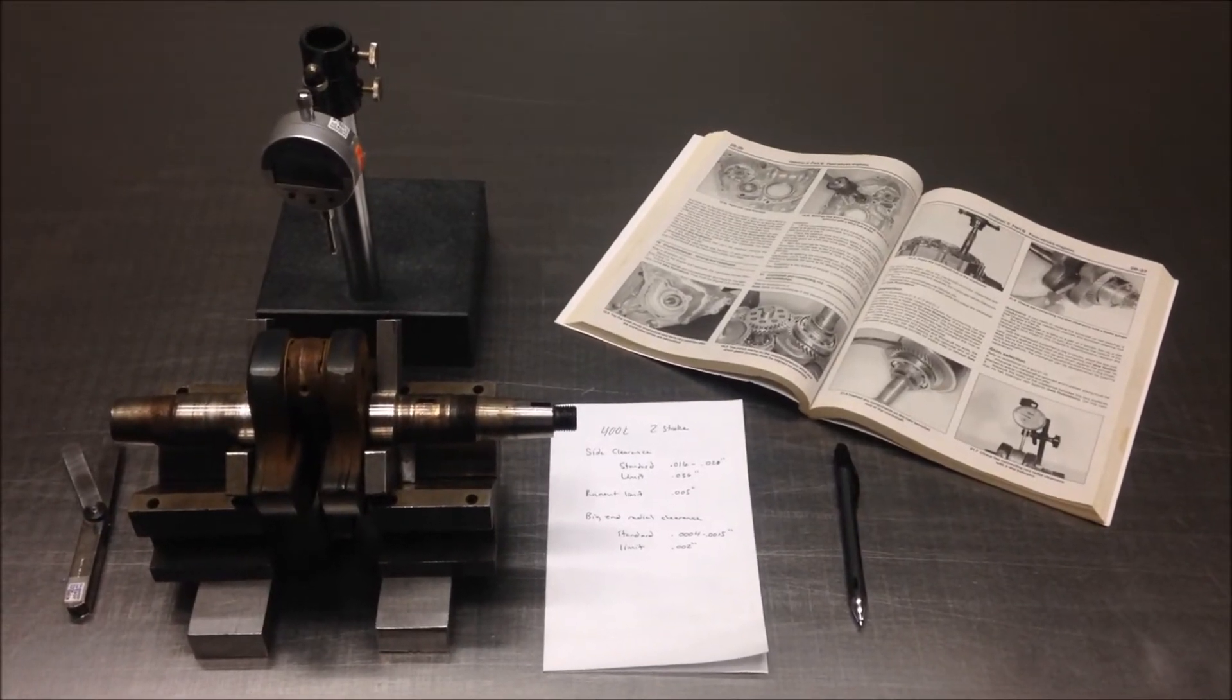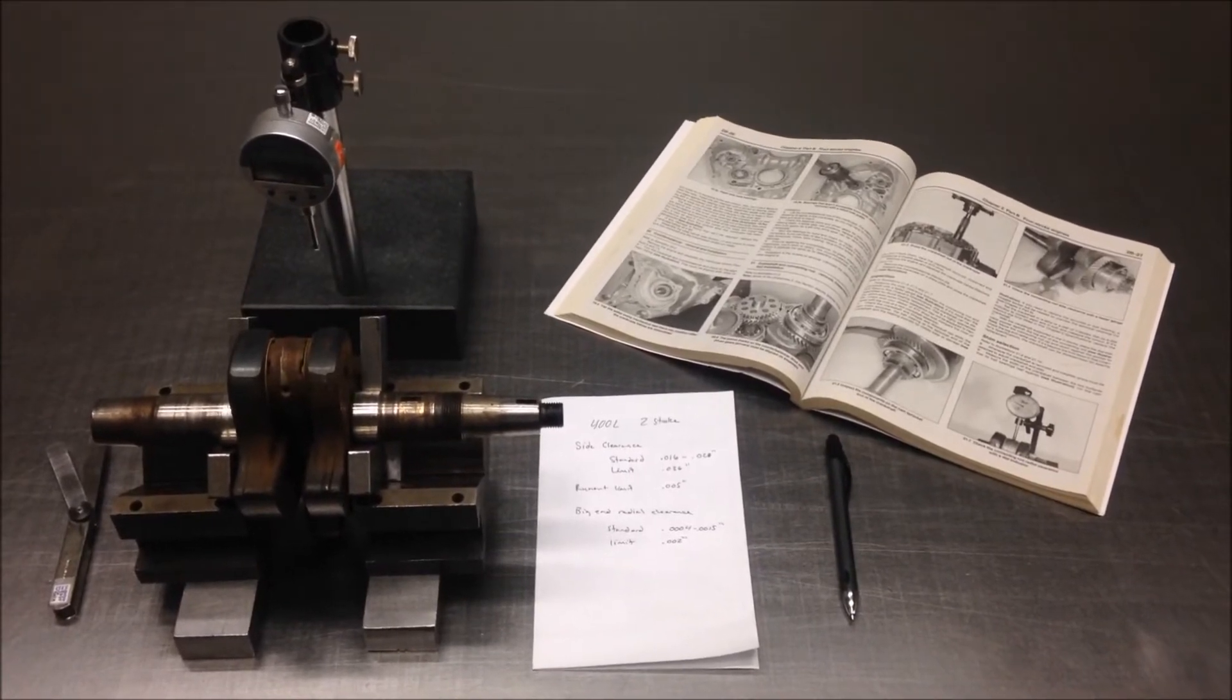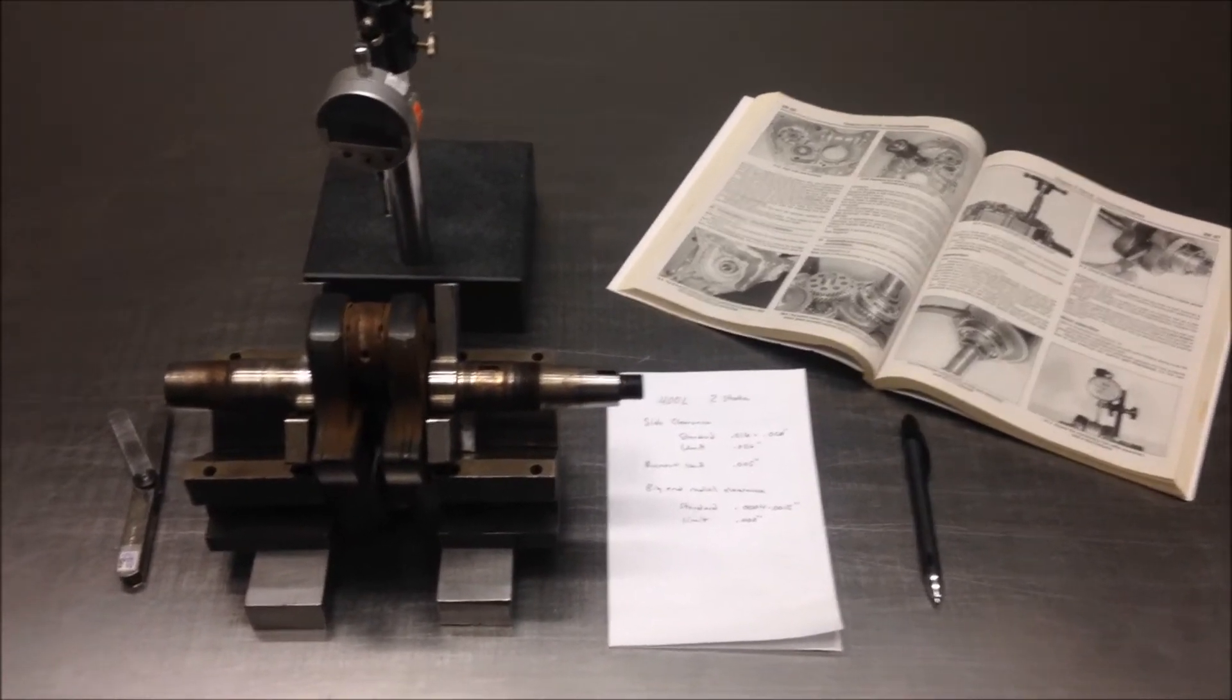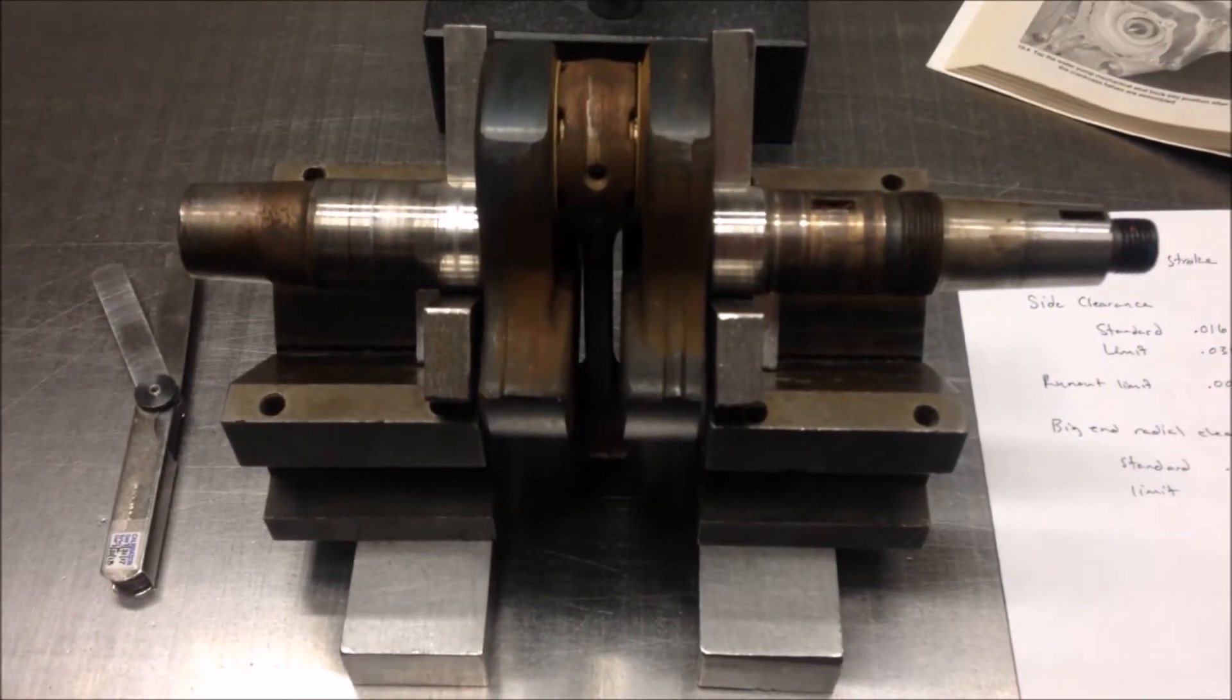Hello everyone, today I'm going to show you how to check the side clearance, the run-out, and the big end radial clearance of a Polaris 400L liquid-cooled two-stroke engine.